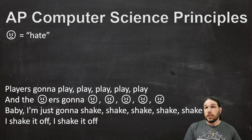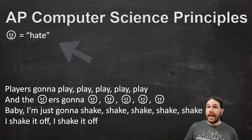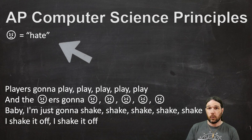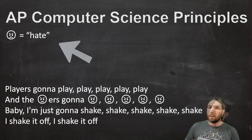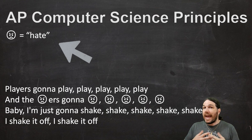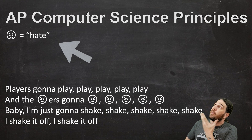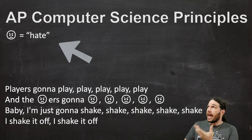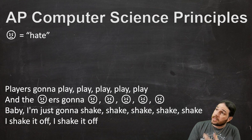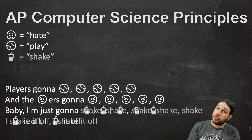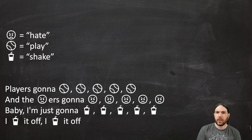However, we do need to make sure we include a translation — a dictionary, if you will. We need to make sure that the computer is able to reconstruct what we originally meant. Those angry faces do not mean anything on their own. Somewhere in the code we have to put in that the angry face means 'hate.' If we want to compress the file even further, we can do the same thing for 'play' and 'shake.'